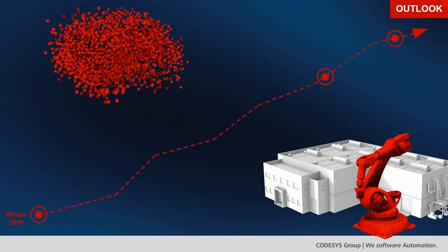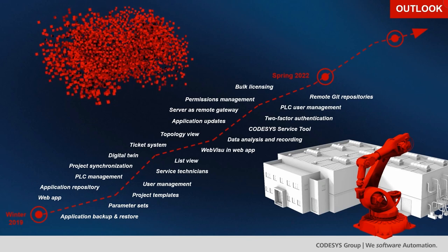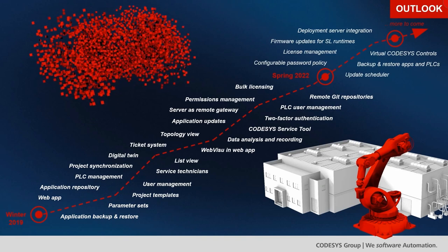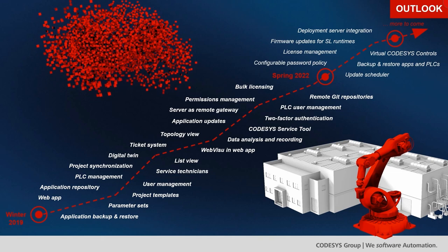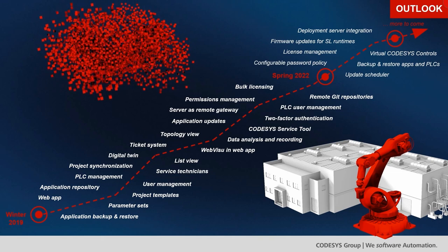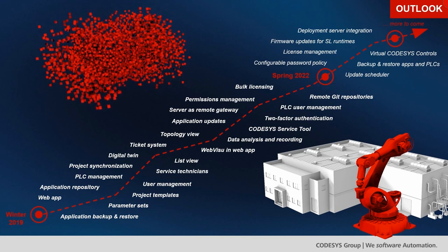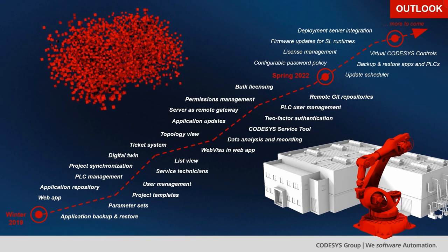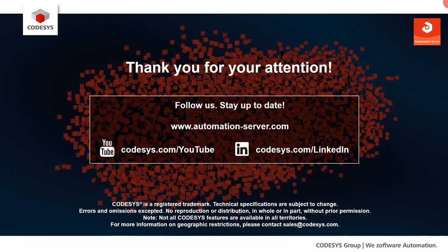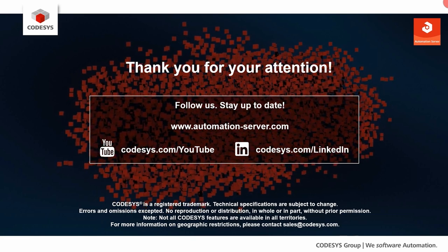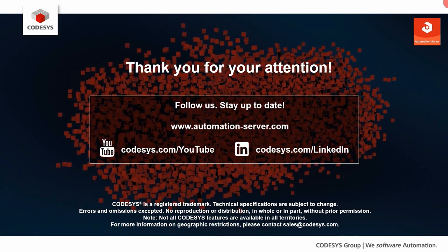Looking at upcoming features for the automation server: already available features form the foundation, with new features coming from spring onwards. These include a configurable password policy, a comprehensive license management system, an update scheduler allowing you to plan application updates for your PLCs — for example, at night when machines aren't running — and virtual CodeSys controls as part of the automation server. If you are interested in new features, visit automationserver.com.